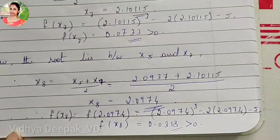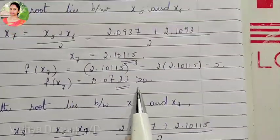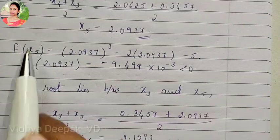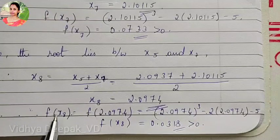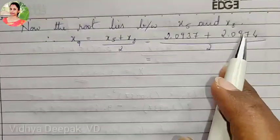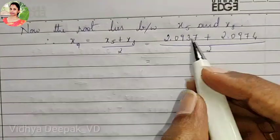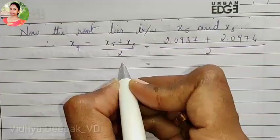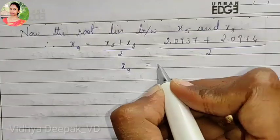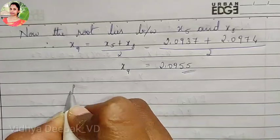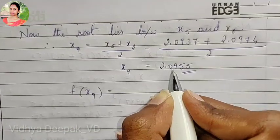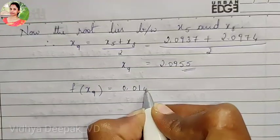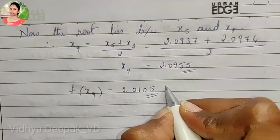f of x8 is positive so we check for the previous negative, which is f of x5. The root lies between x5 and x8. So x9 equals x5 plus x8 divided by 2: 2.0937 plus 2.0974 divided by 2, giving x9 equal to 2.0955. f of x9 is f of 2.0955, and calculating gives 0.0105, which is greater than 0.